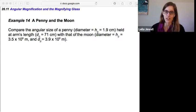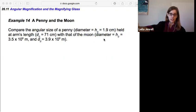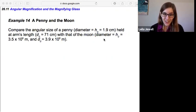Now we can get into the implications with this example of a penny and the moon. Compare the angular size of a penny, diameter h_o is 1.9 cm, held at arm's length, d_o is 71 cm, with that of the moon, diameter 3.5 × 10^6 meters, and d_o 3.9 × 10^8 meters.